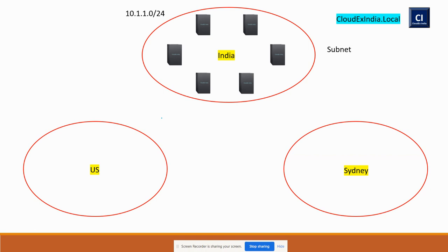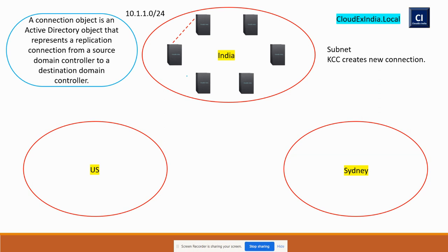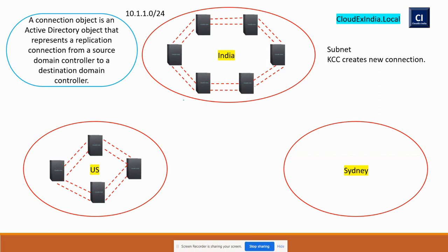Please make sure all subnets are associated with the appropriate site to avoid latency, delay in authentication, and delay in discovery. Once you promote a domain controller, another domain controller within the site automatically creates a connection between them. This connection is created by the KCC (Knowledge Consistency Checker) and is known as a connection object. A connection object is an Active Directory object that represents a replication connection, and this happens between all domain controllers within a site and between all sites.